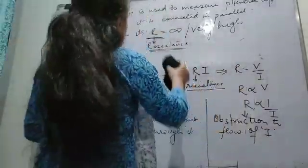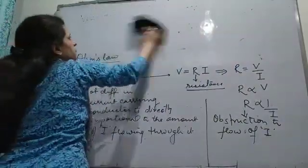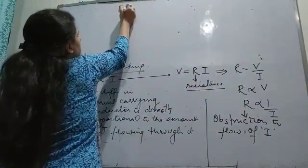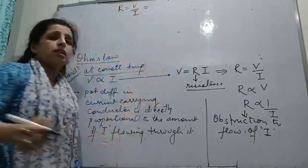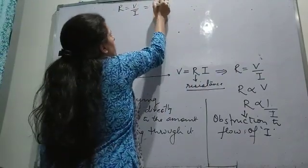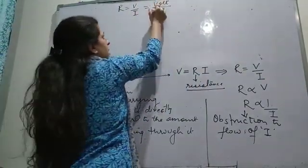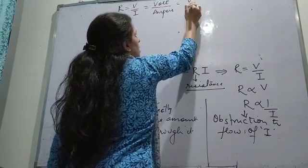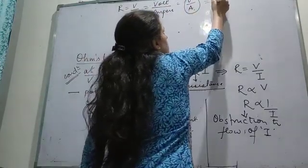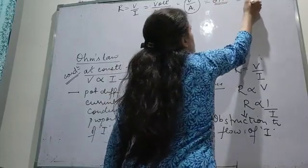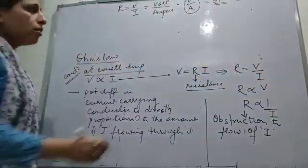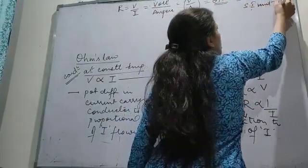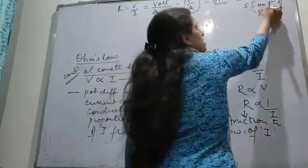Let us find the SI unit of resistance. We have R = V / I. The SI unit for voltage is volt and for current is ampere. So the SI unit of resistance is volt per ampere, and this together is known as ohm, represented by the symbol Ω. This is the SI unit of resistance.